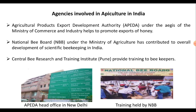Let us see some of the agencies involved in apiculture in India. The Agricultural Products Export Development Authority, under the Ministry of Commerce and Industry, helps promote and export honey. The National Bee Board, under the Ministry of Agriculture, has contributed to the overall development of scientific beekeeping in India. The Central Bee Research and Training Institute, located in Pune, provides training to beekeepers. The Khadi and Village Industries Commission provides training and develops appropriate technologies suited to Indian beekeeping in rural areas.